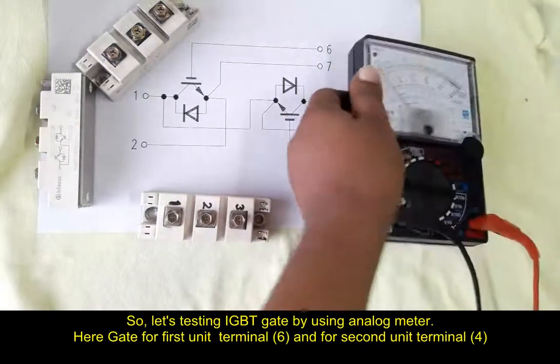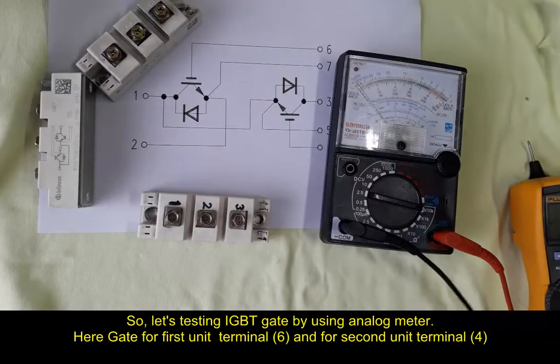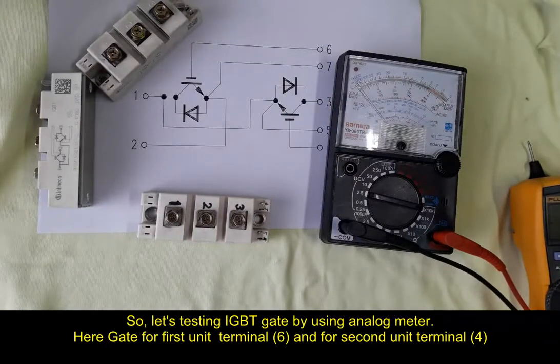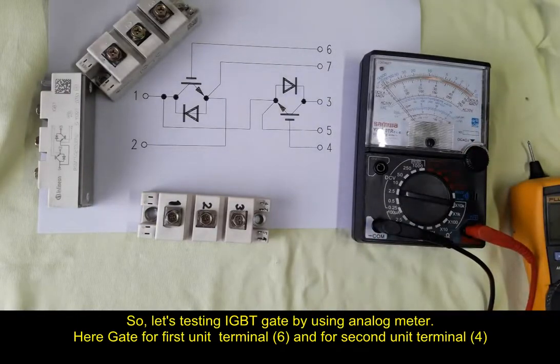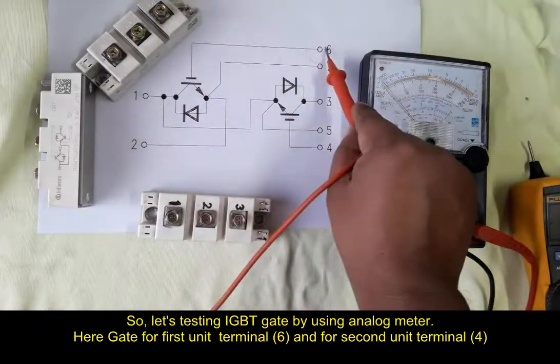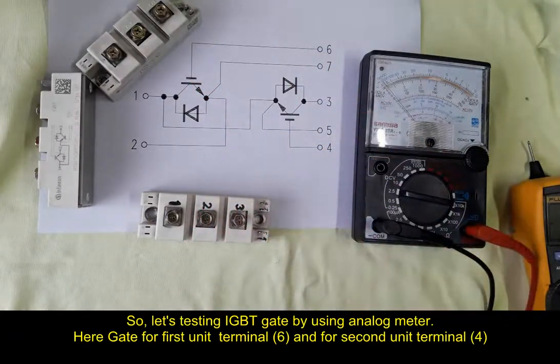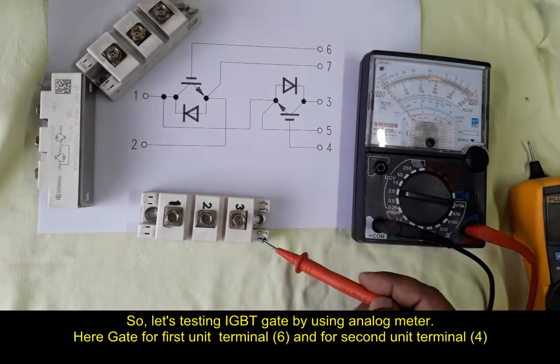So let's test IGBT gate by using analog meter. Here gate for first unit is terminal 6 and second unit is terminal 4. This is for first unit gate and this is for second unit terminal 4 for gate.